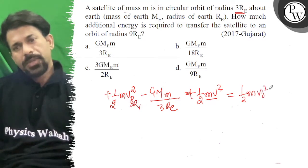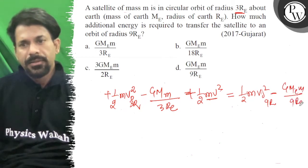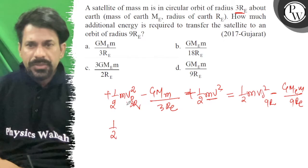For the 9Re orbit minus GMm over 9Re, so half of mv0²... This will become GM by 3R minus GM by 3R.